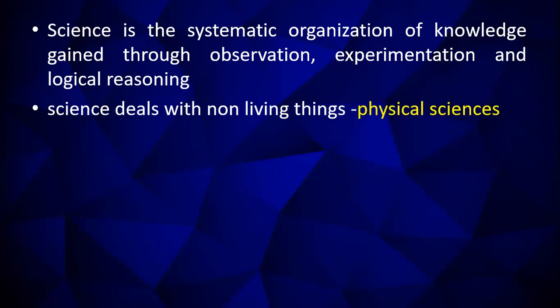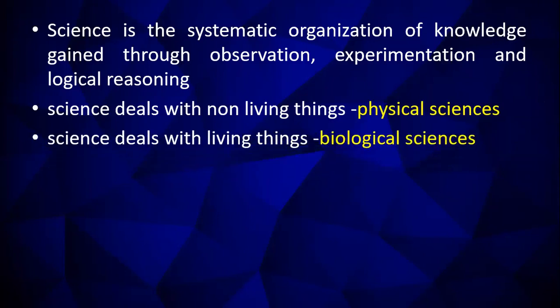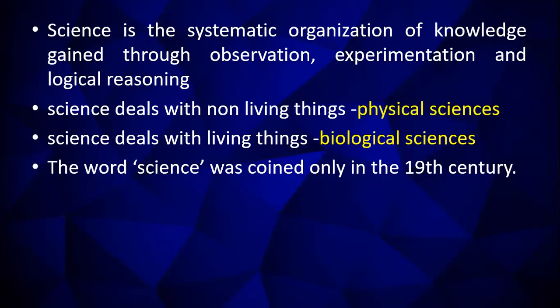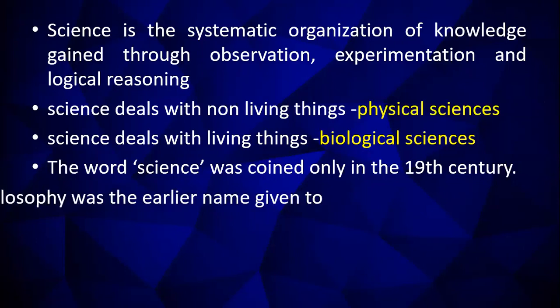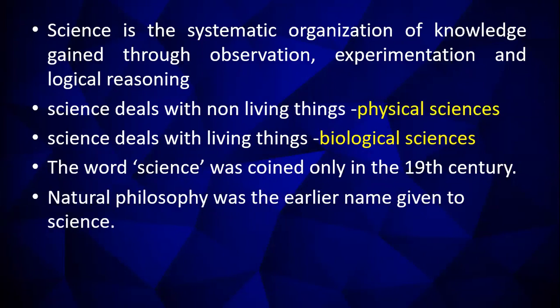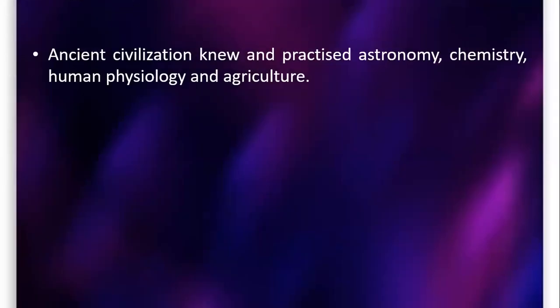The knowledge of science dealing with non-living things is called physical science, and with living things it is called biological science. So science is broadly divided into physical science and biological science. The word 'science' was coined only in the 19th century. Before that it was called natural philosophy — that is the older name for science.